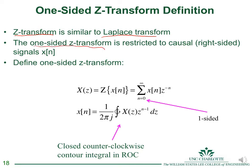There is also a one-sided Z-transform, which is restricted to causal or right-sided sequences — sequences that only exist from zero and upward; x(n) is zero for values of n less than zero.